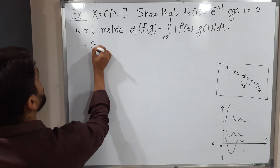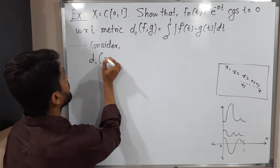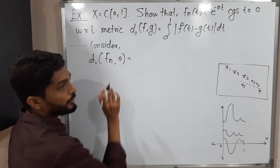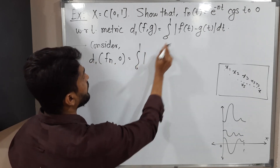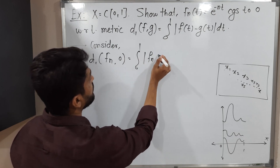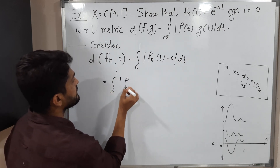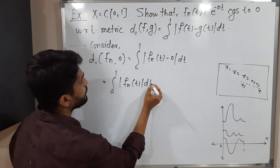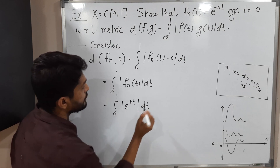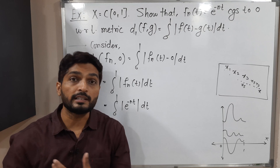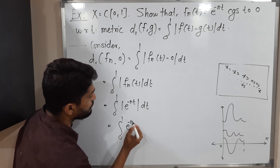Let us find — I am going to find the distance. That means with this metric, we compute D1(fn, 0). The D1 definition is given here. We integrate from 0 to 1: |f(t) - g(t)| dt, where f(t) is fn and g(t) is zero. If you subtract zero you get the same. Putting the value of fn(t), which is e raised to minus nt. Since the exponential function cannot be negative, no need to apply the modulus. So we write the integral from 0 to 1 of e raised to minus nt.